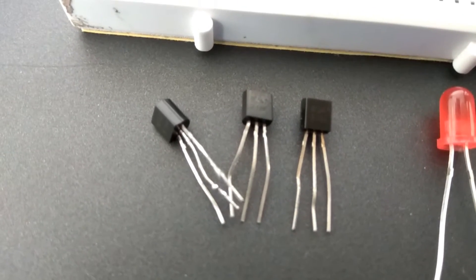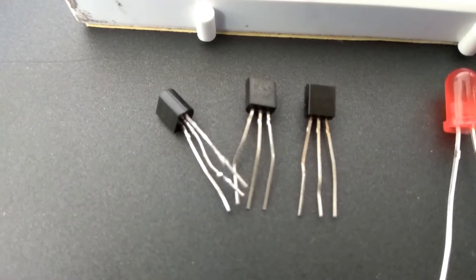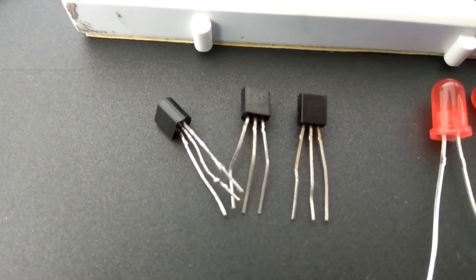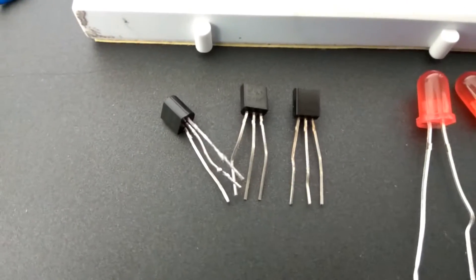Insert the transistors with the flat surface facing toward you. The pins from right to left are: emitter, base, and collector. Insert the transistors on the breadboard.